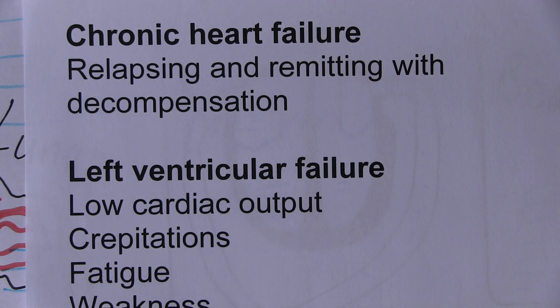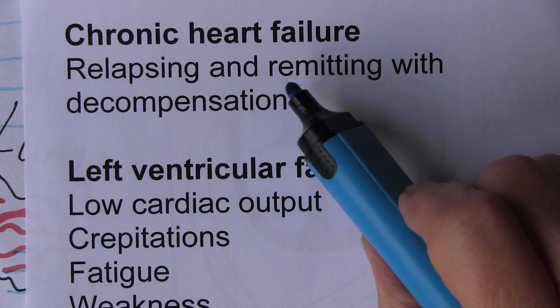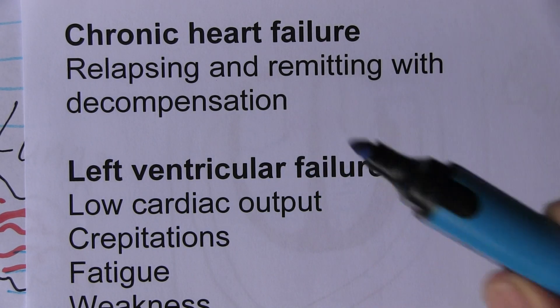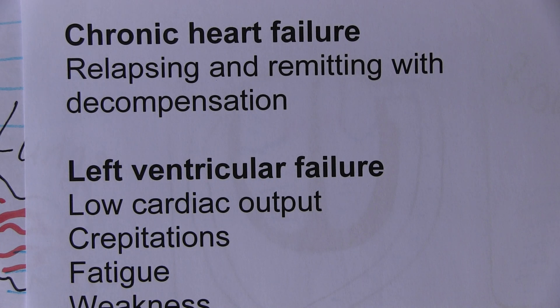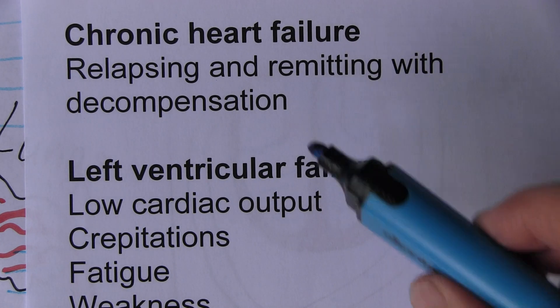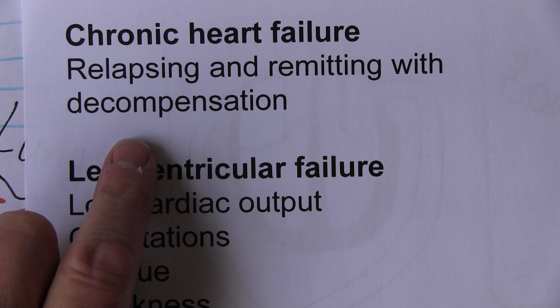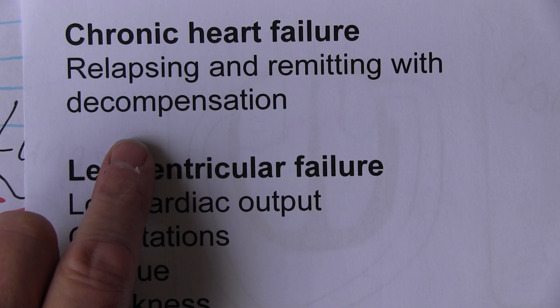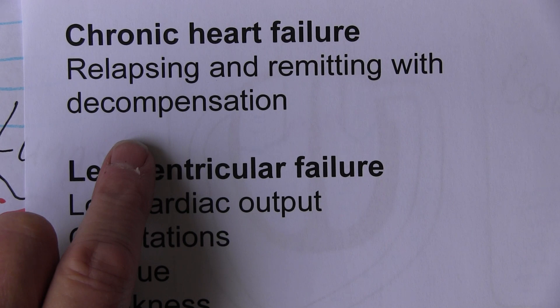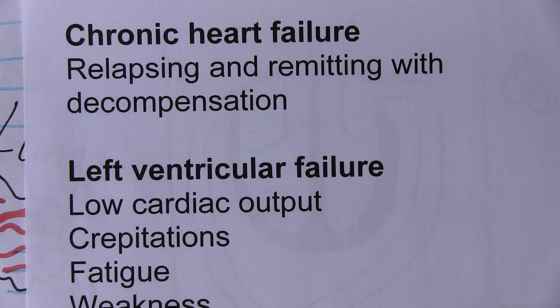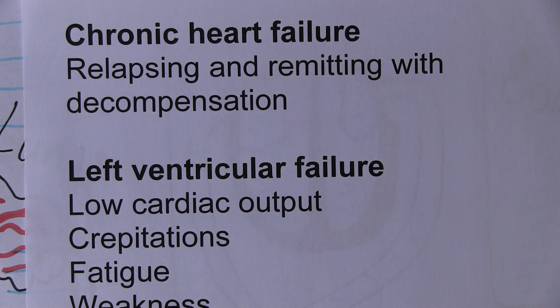Very often in chronic heart failure it's relapsing and remitting. The condition never goes away but as the patient compensates, the features remit. Then they'll have episodes such as intercurrent infection which causes a relapse and decompensation where the patient becomes much more symptomatic. For example, if the patient has MI or ischemia becomes worse, or develops atrial fibrillation, or has a pulmonary embolism, or anemia will make it worse by increasing the required workload of the heart.